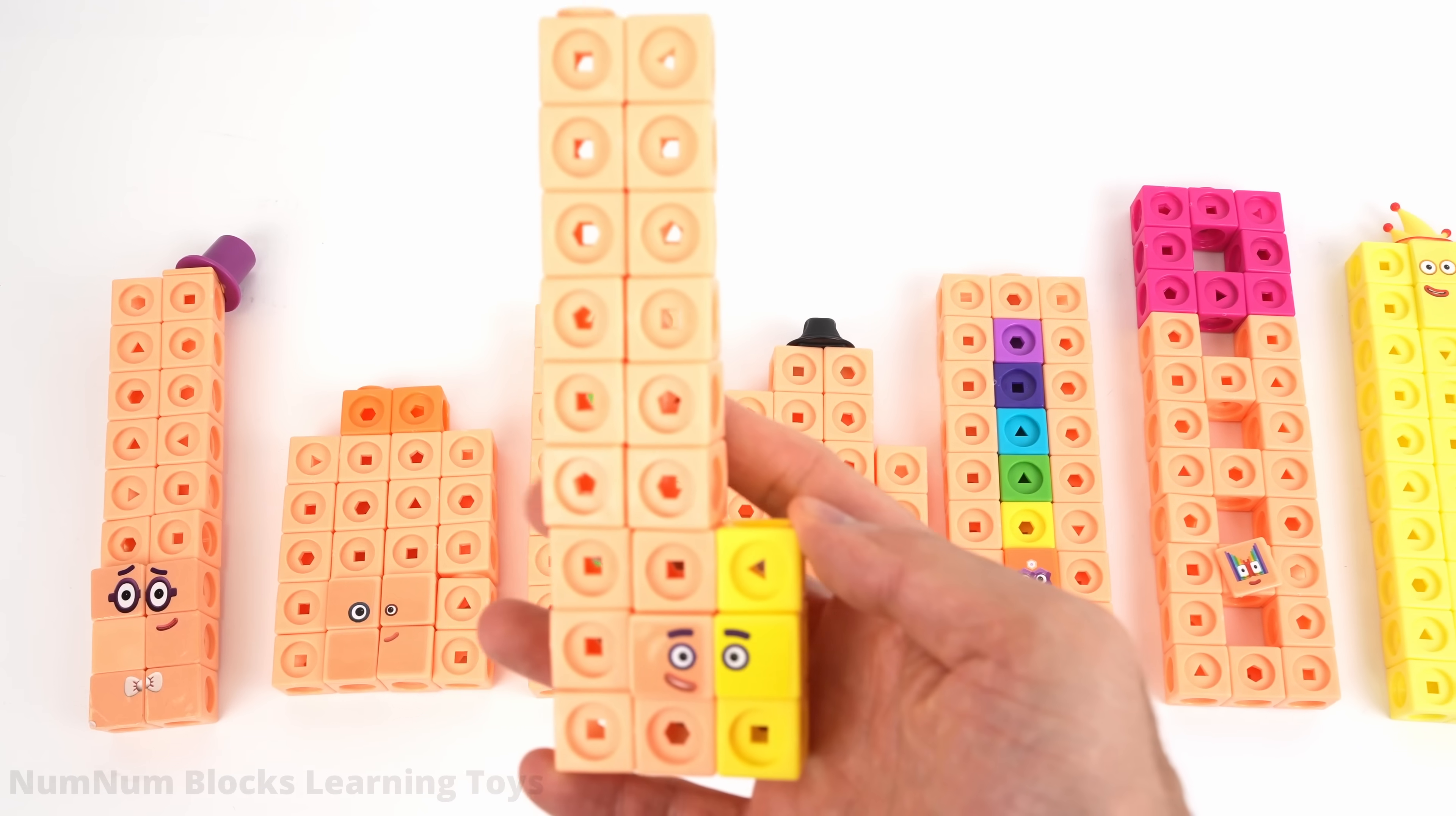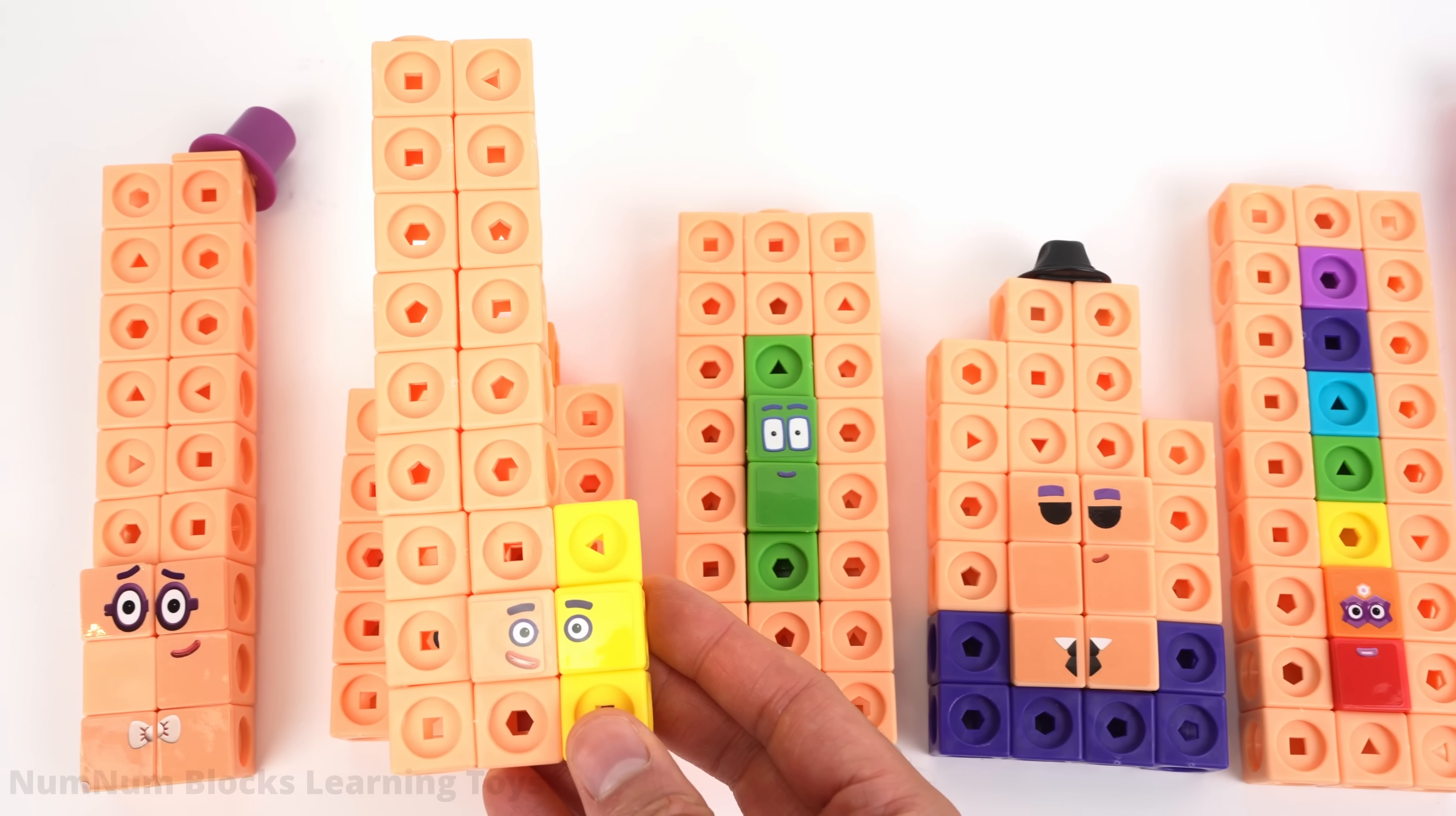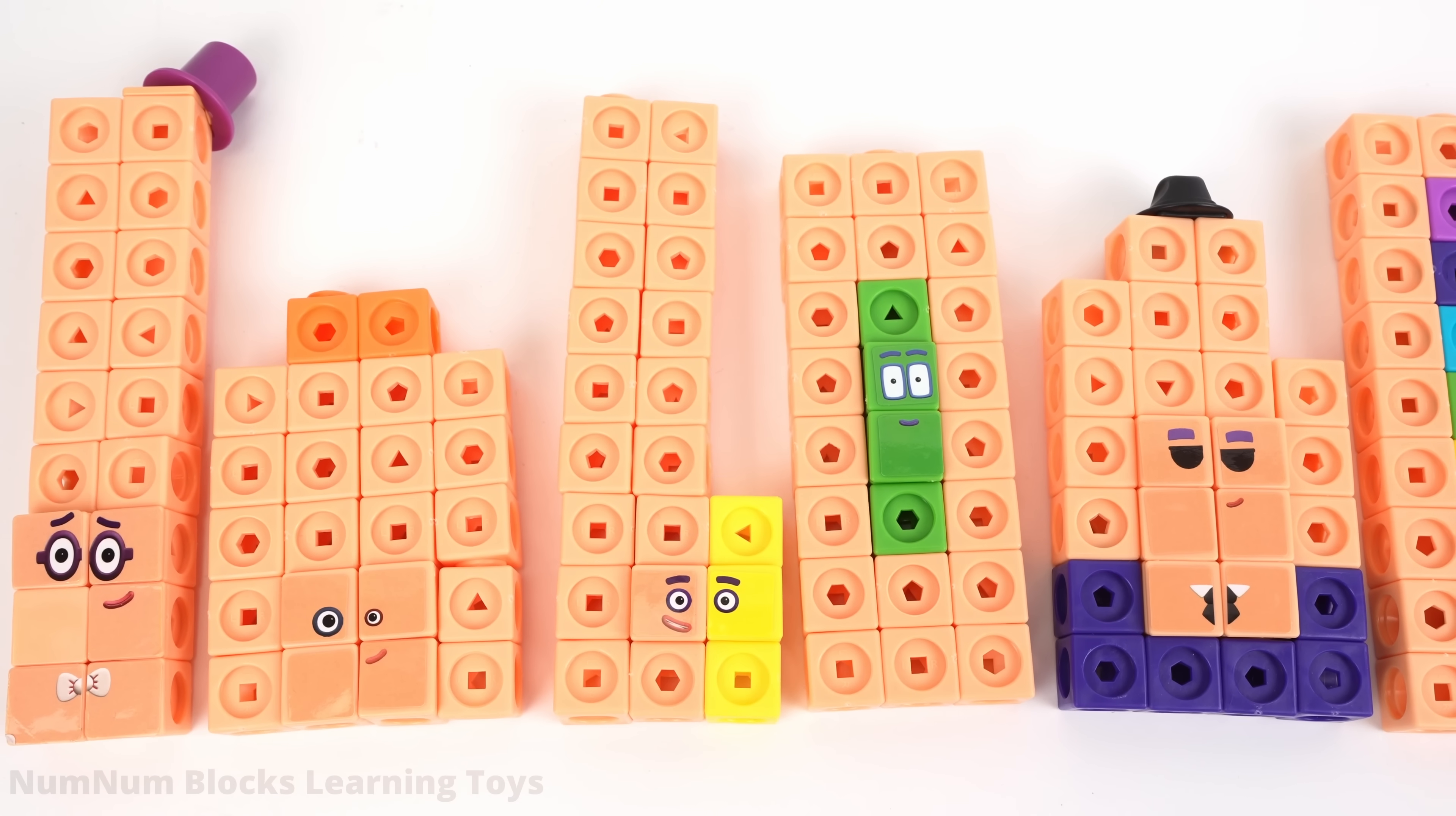Now it's time to place 23 in the correct position. Let's start from the right. What number comes after 23? 24. Here's 24. 23 goes to the left of 24 because it's one less than 24.